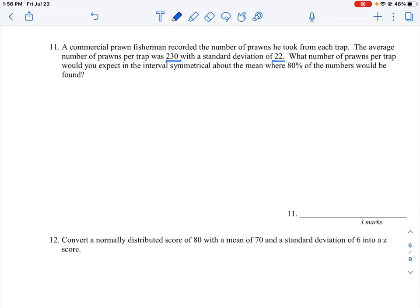Okay, so what we need to do is take a look at this as a picture here. We're going to have our standard normal curve, which is our curve that's going to look like this. We are looking for an interval that is symmetrical about the mean. The mean is going to be the peak of the curve, and we're looking at 80% of the numbers would be found.